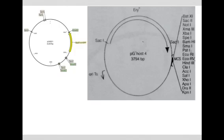This is a broad host range origin, which means that it can be used in E. coli, where we'll do most of the recombinant DNA techniques. But then it can be introduced into other organisms, including potentially C. difficile, where it will also replicate. The temperature-sensitive part we'll get to eventually, but for now the most important thing is the broad host range.